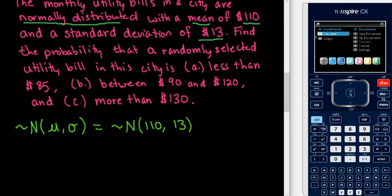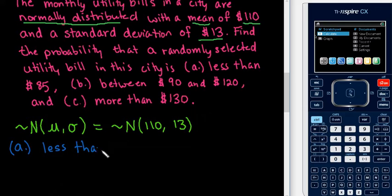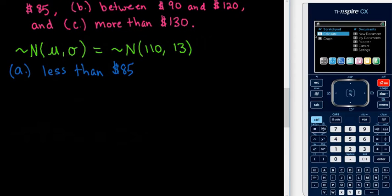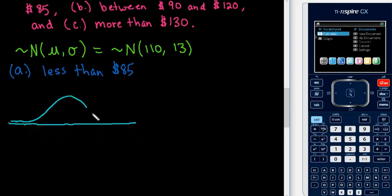Now we are going to find our probabilities. The first probability we are looking for is the probability that when we randomly select a utility bill, that specific bill will be less than $85. For this one, I'm going to draw out the complete normal model with all three standard deviations so you can see how you would do that. It's always important to draw at least a rough sketch so you can see what your approximate area is.